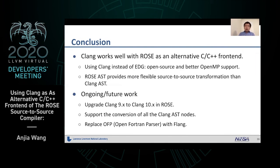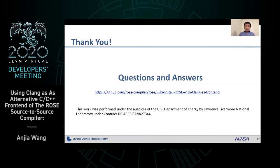To sum up, Clang works very well with Rose as a frontend. We can use Clang to replace EDG, and with this integration, Clang can support source-to-source transformation. In the future, we will upgrade Clang 9 to Clang 10 and support all the Clang AST nodes. If worthwhile, we will also replace OFP with Flang. Thank you very much. Please feel free to leave your questions and comments.